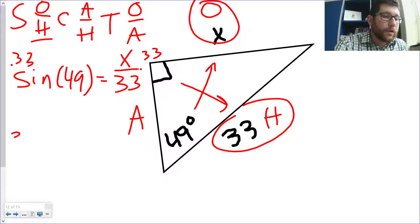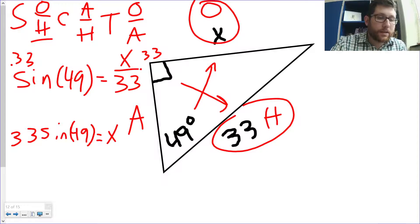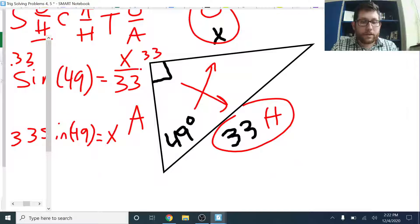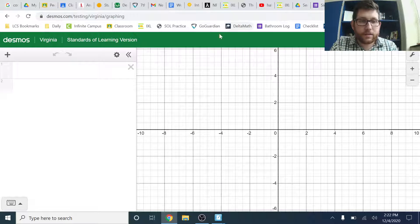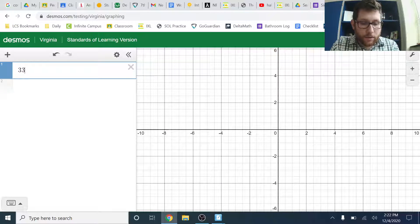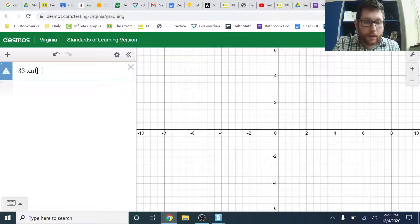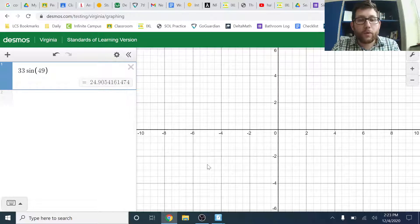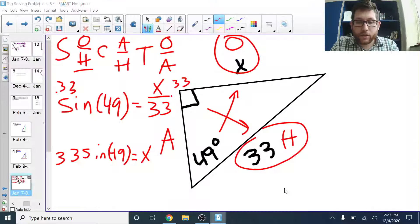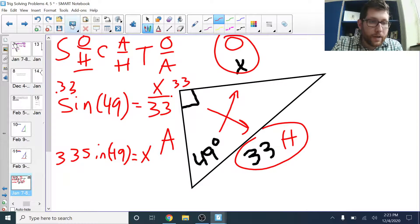So, I know 33 sine 49. Remember, we keep those separate. It's equal to X. Let's go ahead and go to our calculator and see if this makes sense. So, 33 sine 49. I had 24.9 as an answer. So, let's go back and take a look. 24.9.